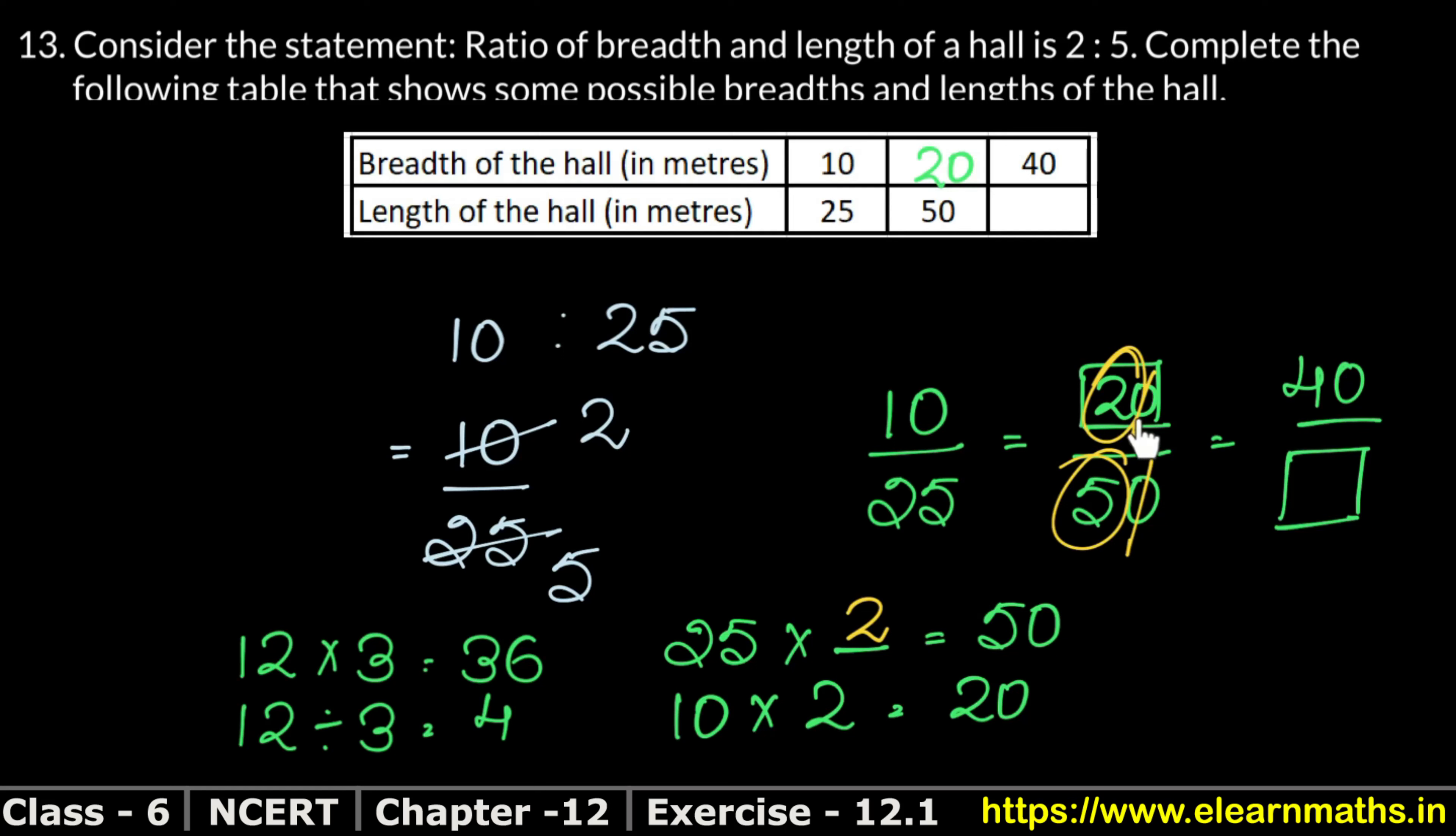Here we have 20 and 50, and 40 is greater than 20. So in 20, something multiplied gives 40. We know 2 times 20 is 40. So we multiply 50 by 2. How much will it be? 100. So here we have 100. These are equivalent fractions. You have to see if the number is increasing or decreasing. If increasing, multiply by the same number. If decreasing, divide by the same number. This is our answer.